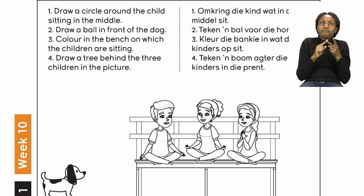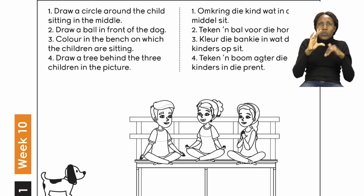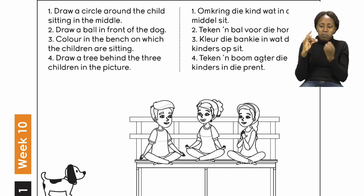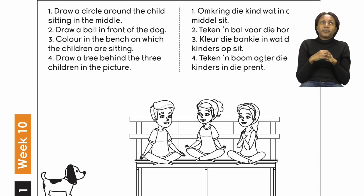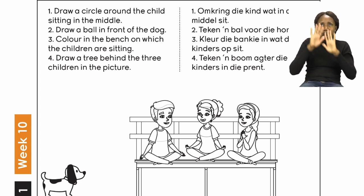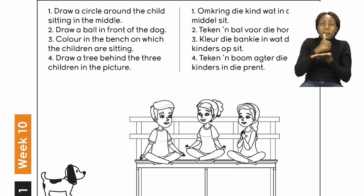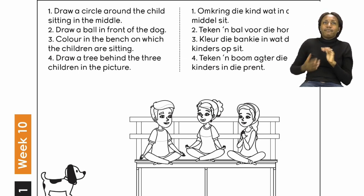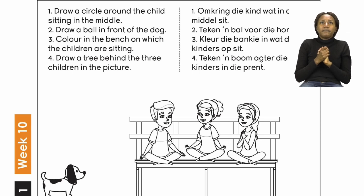The next instruction says draw a ball in front of the dog. You can see there is a cute little dog, and you need to draw a ball in front of it. Well done. The next one says colour in the bench on which the children are sitting. You are going to colour that bench.